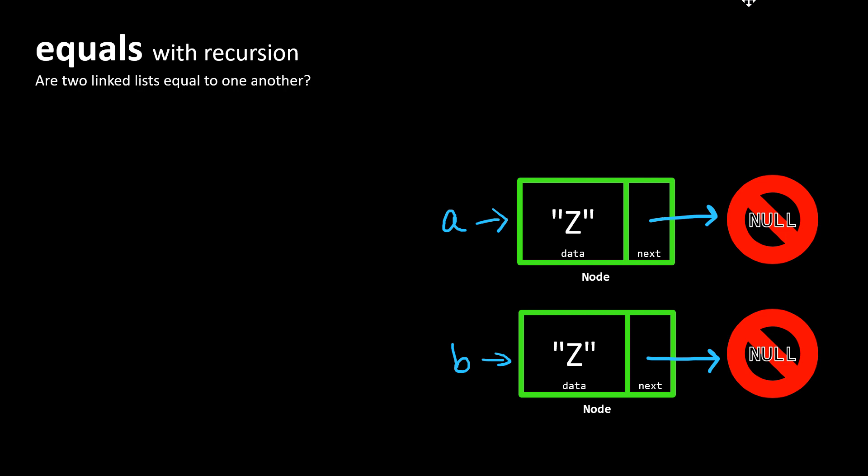How might we make this statement programmatically? When you call your function equals and give it a reference to A and B, these are references pointing to these nodes that we're looking at here.